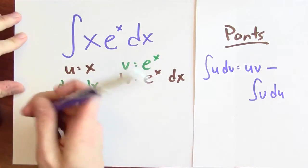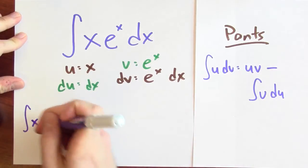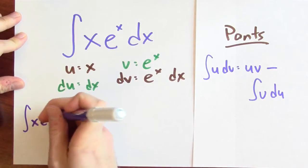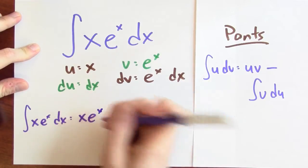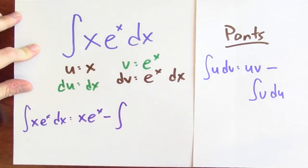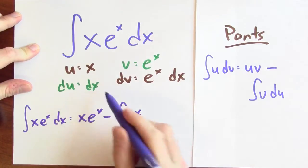So, in this case, the anti-derivative of u dv is u times v, x times e to the x minus anti-derivative of v du,